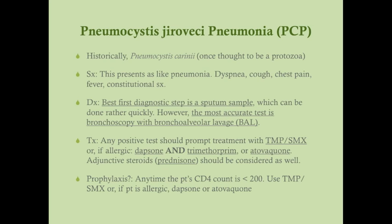PCP presents like any pneumonia: cough (productive or not), dyspnea, chest pain, fever, and constitutional symptoms. In an HIV patient presenting with pneumonia, the immediate first step — once stable — is to get a CD4 count. If it's 700–900, an opportunistic infection is unlikely and you treat like regular pneumonia. But if the CD4 count is 150–170, PCP must be in the differential, because treating only with antibiotics will miss PCP and the patient will deteriorate.